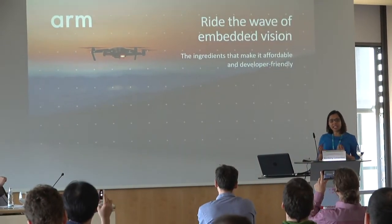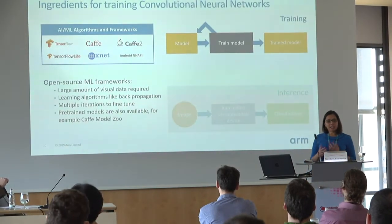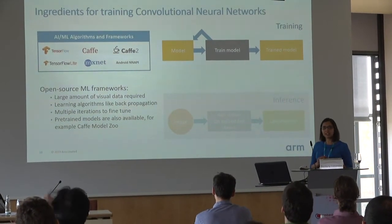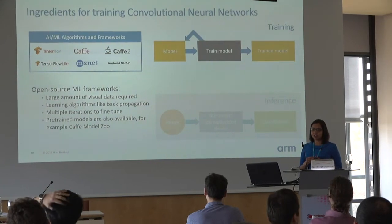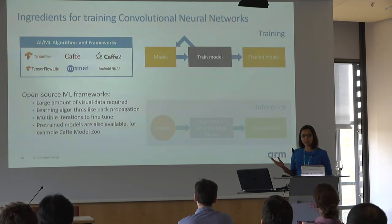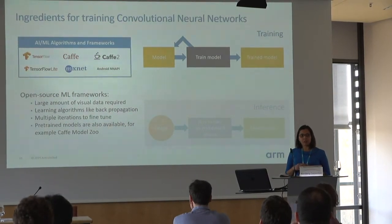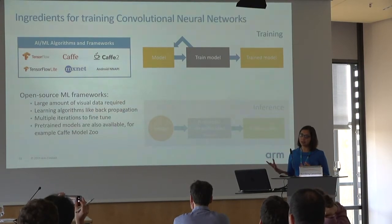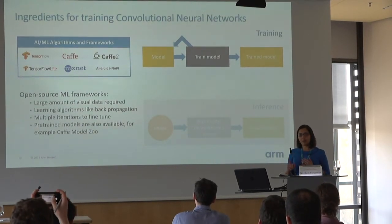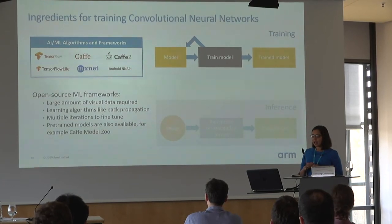I want to go into some of the key ingredients that make it developer-friendly to ride this wave of embedded vision. Training is usually accomplished using open source machine learning frameworks, contributed by academia as well as industry, and they are largely open source. They allow you to train a model. Many image data sets are available — for example, ImageNet with tens of millions of images. Training involves algorithms such as backpropagation and typically needs a few iterations to get a good model. Pre-trained models are also available; for example, with the Caffe framework, you have the model zoo.